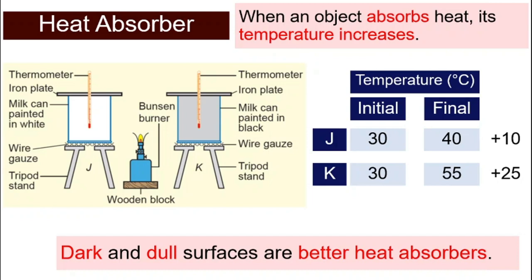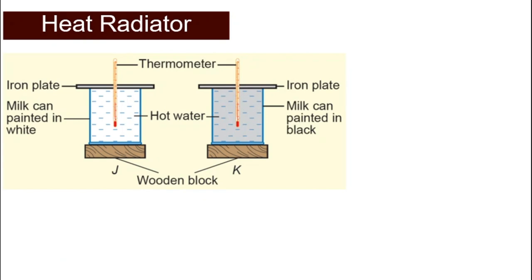So remember, dark and dull surfaces are better heat absorbers. Meaning when it is hot around them, they become hot themselves faster compared to white and shiny ones.